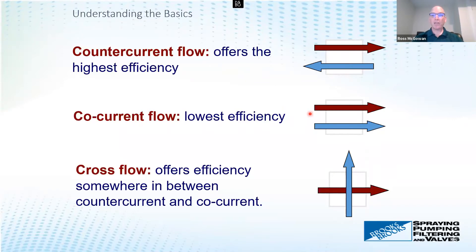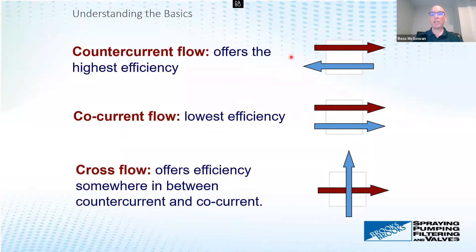A hybrid is cross flow, where one fluid flows essentially 90 degrees to the other — not counter or co-current. You get a sort of hybrid efficiency between the two. It's the second most efficient way, and you want to be counter-current as much as possible to efficiently exchange heat.